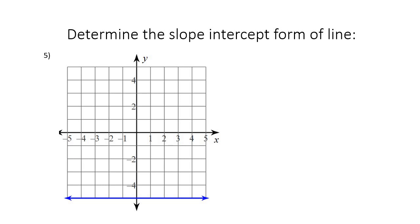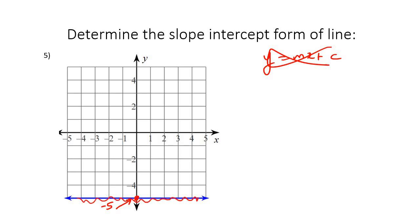Here's another example. Remember, when it's a horizontal or vertical line, you don't use y equals mx plus b or c. You just look at this value here and realize that's a y value of minus 5. So if you look at every single point on this line, the y value is always minus 5. This equation is simply y equals minus 5.